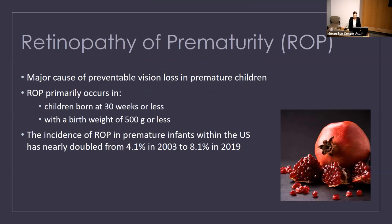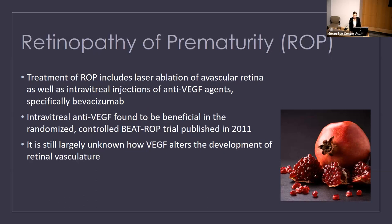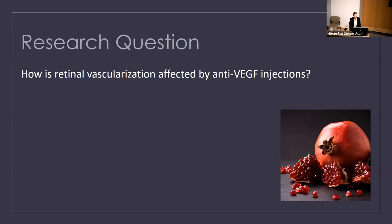Treatment of ROP includes laser ablation of the avascular retina as well as intravitreal injections of anti-VEGF agents — specifically bevacizumab. Intravitreal anti-VEGF was found to be beneficial in the BEAT-ROP study published in 2011, but it remains largely unknown how VEGF and anti-VEGF alter the development of retinal vasculature. My big research question is: how is retinal vascularization affected by anti-VEGF injections? The hypothesis is that vascularization of the peripheral retina differs in infants who received anti-VEGF compared to those who did not.